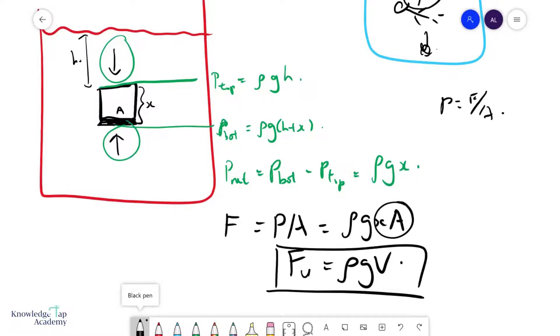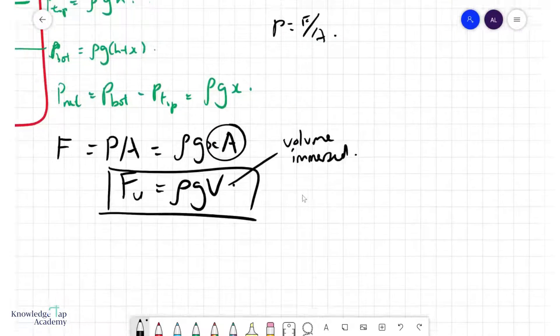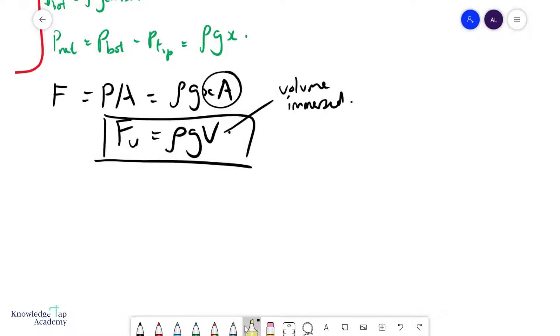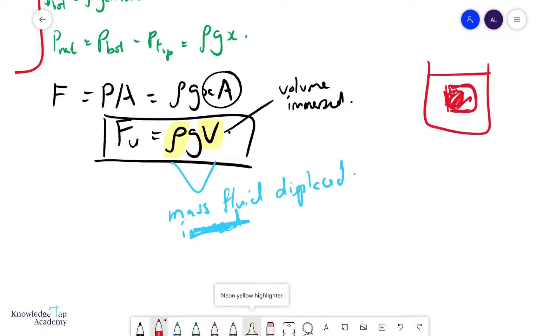ρ density of fluid times G times V, the volume immersed in the fluid. And if we look very carefully at this, you will notice that ρ times V gives you the mass of the fluid that is being displaced by this object. Because if you place a solid object into a fluid, you know that it will push a volume of fluid exactly equal to its volume out, upwards.